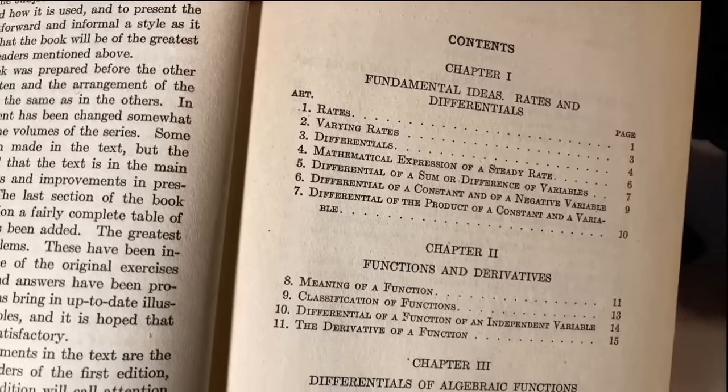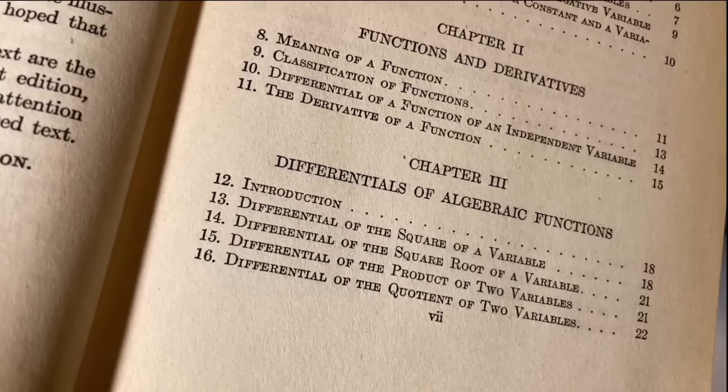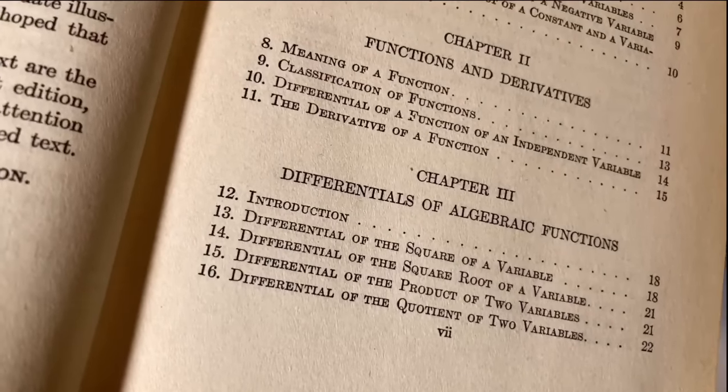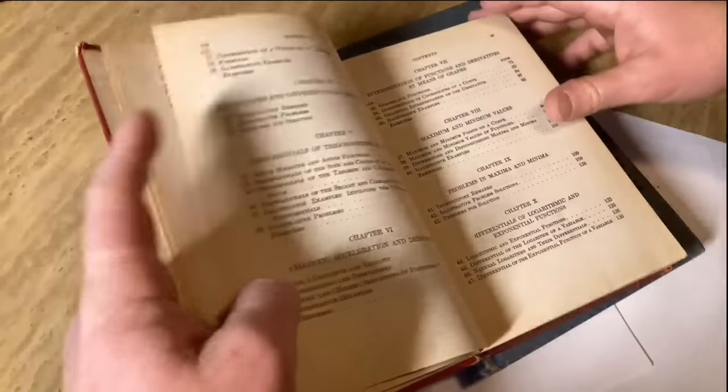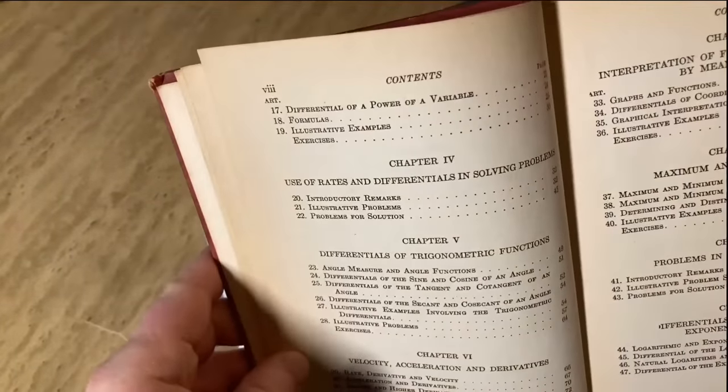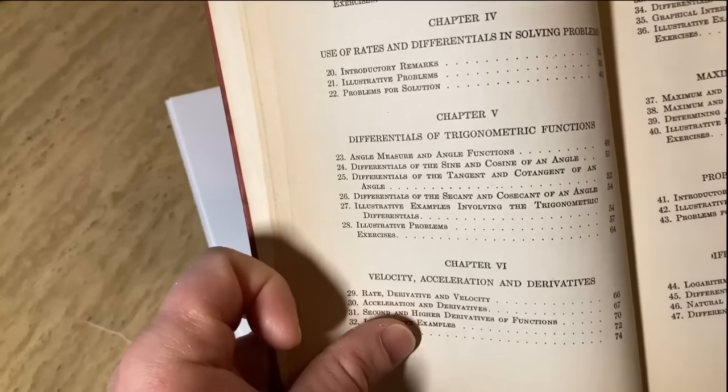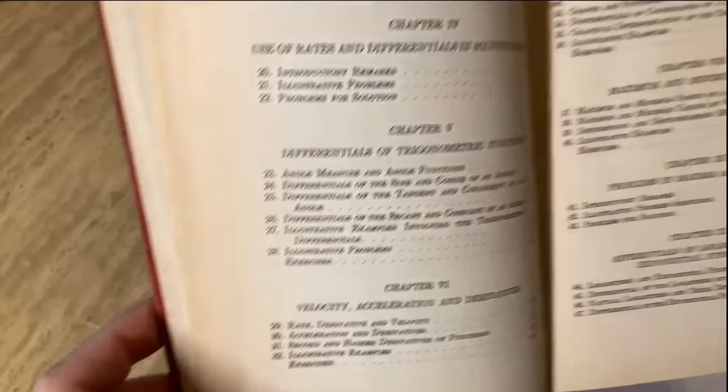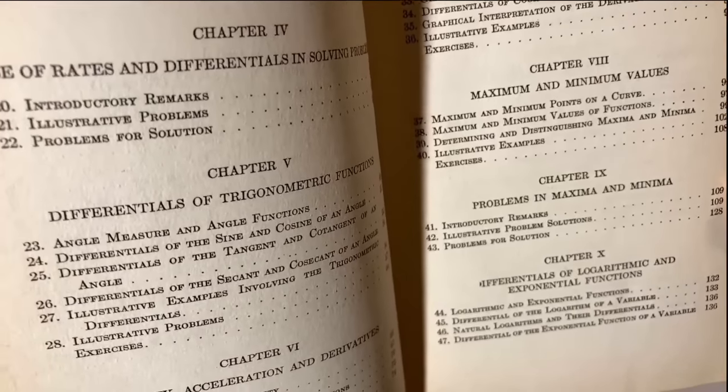Fundamental ideas, rates, and differentials. Functions and derivatives. Differentials of algebraic functions. So differential of the square of a variable. Differential of the square root of a variable. The product and the quotient. So very basic. But notice we're only on page 22, right? So this book has a lot of information and it's really broken down into tiny little subsections, which make it really easy to self-study. You know, you've got these tiny little sections. You can sit down for half an hour to an hour, read it, do a couple exercises. You can check your answer and you can learn calculus like Richard Feynman did. I think that's pretty awesome.